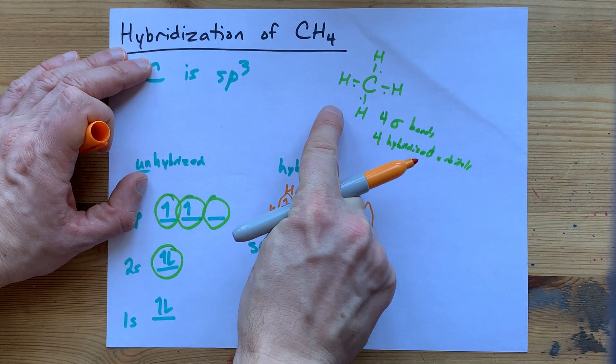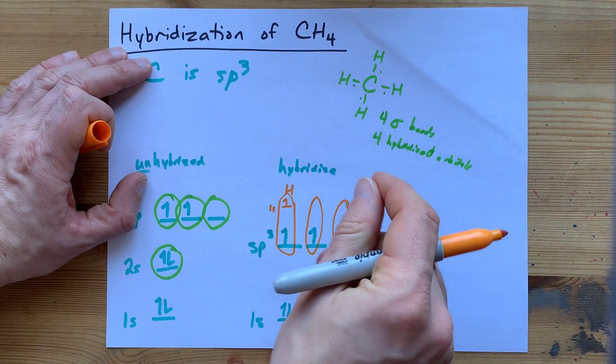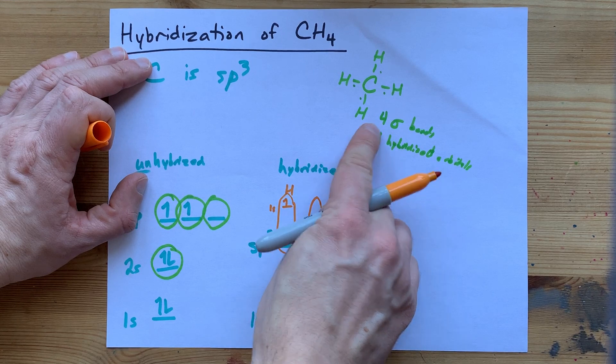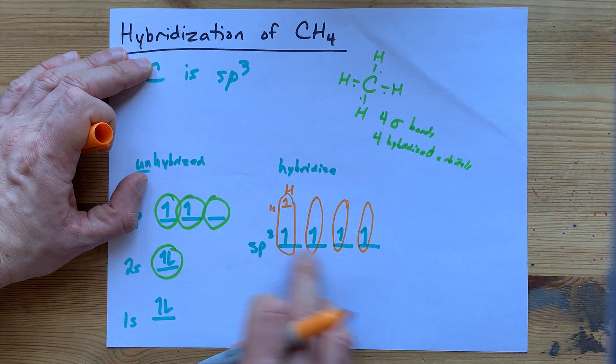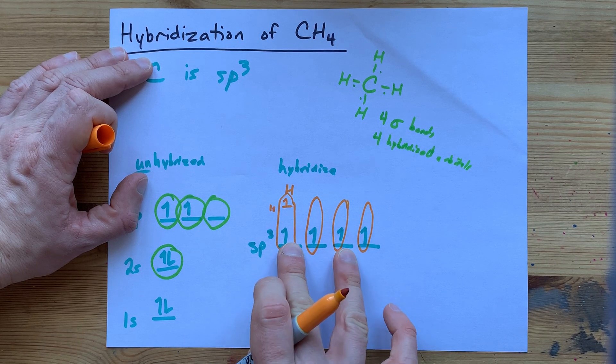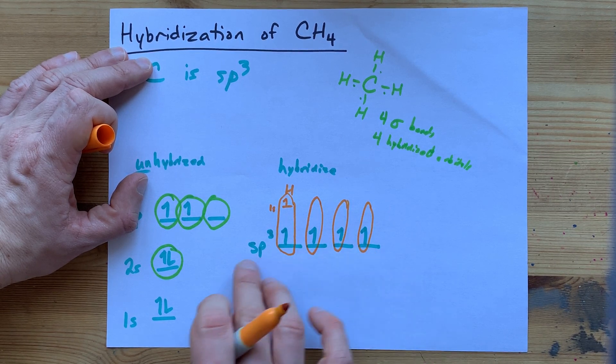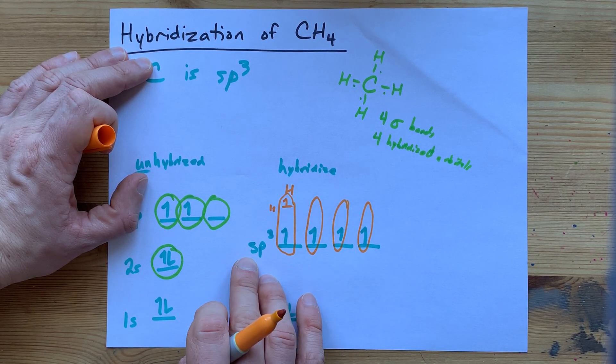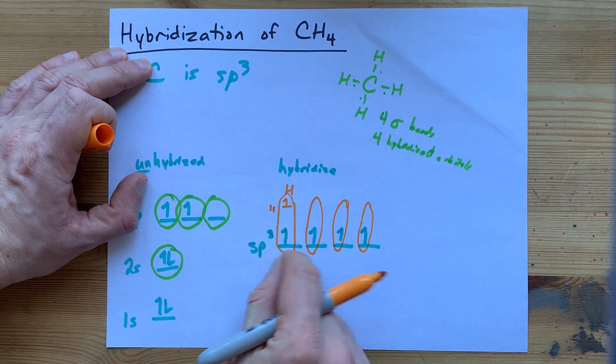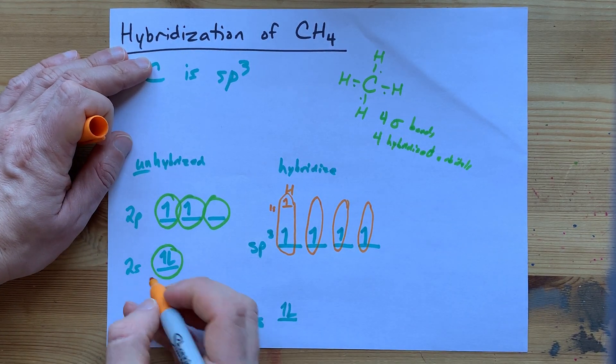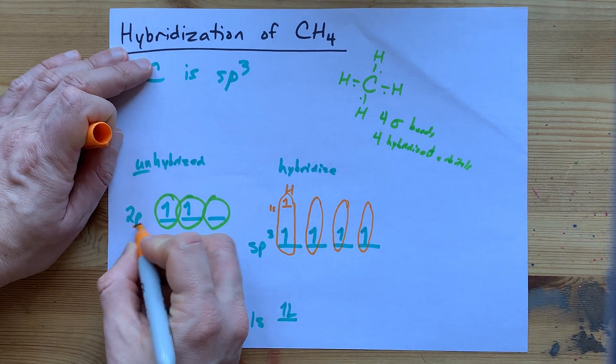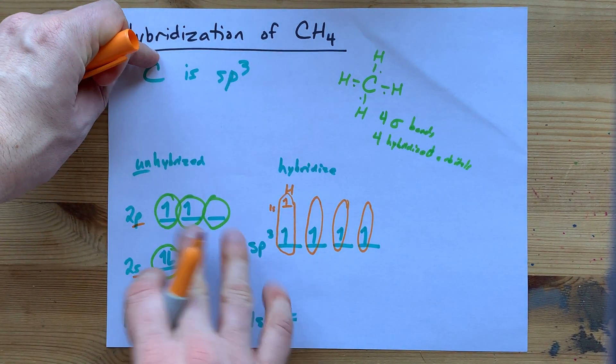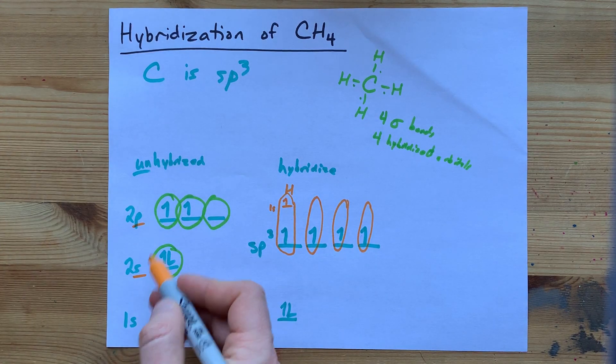But the point is that because you had four hydrogens that you needed to explain sigma bonds for, you needed four equivalent energy hybridized orbitals. And the only way to get four equivalent energy hybridized orbitals is to combine the S, of which there's one, with all three of the Ps, of which there are three. One and three is four.